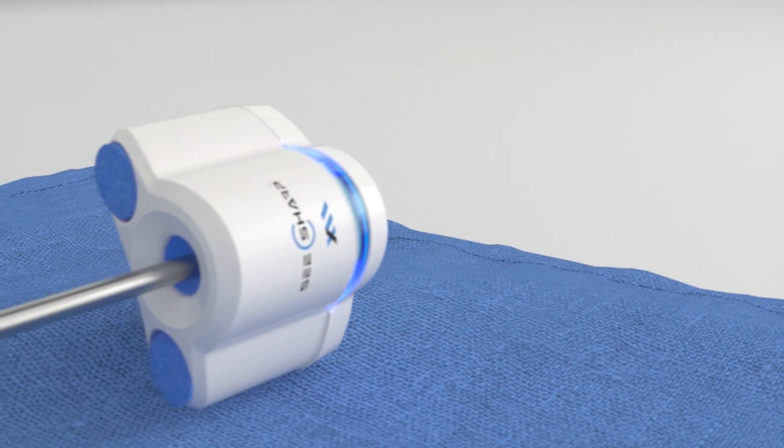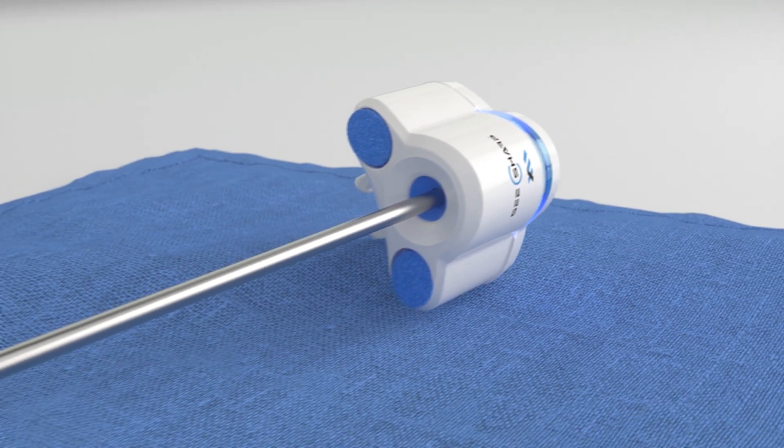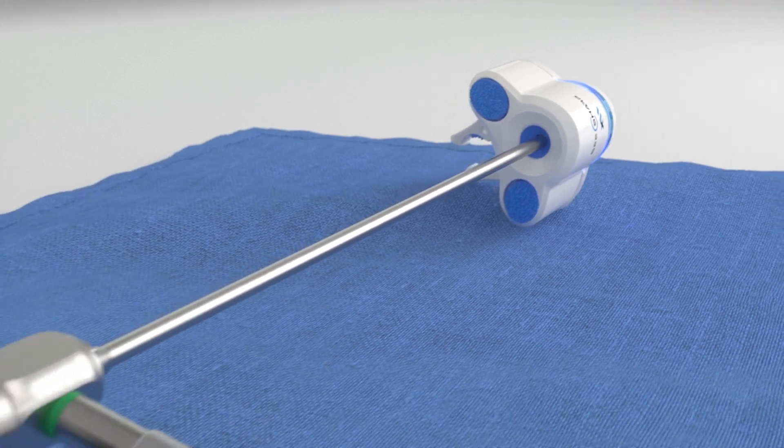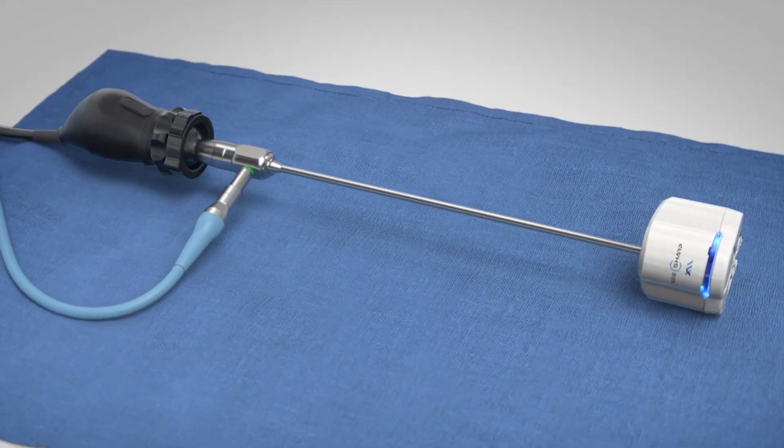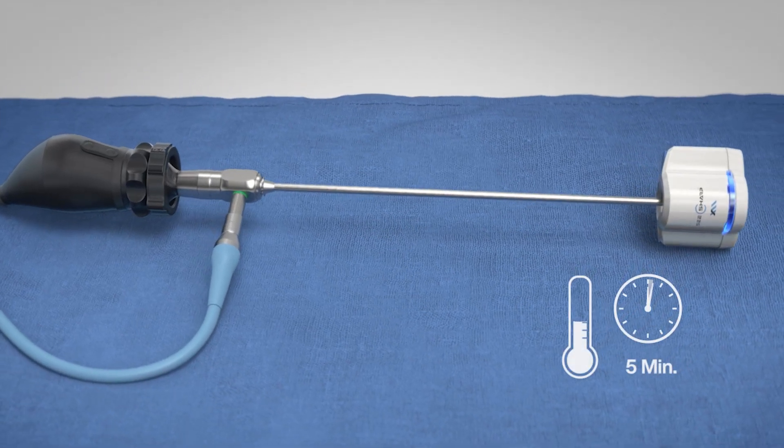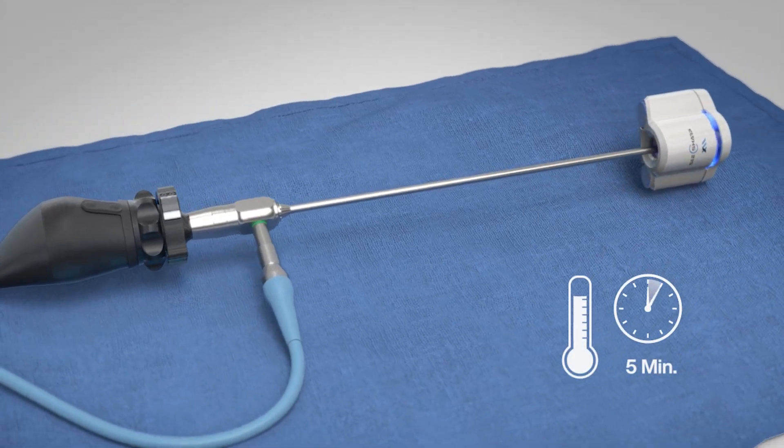Once the C-Sharp is at operating temperature, begin warming the laparoscope by fully inserting the lens into the reservoir. Note that the C-Sharp may be placed on its side to facilitate scope warming. Please allow five minutes to complete this stage.